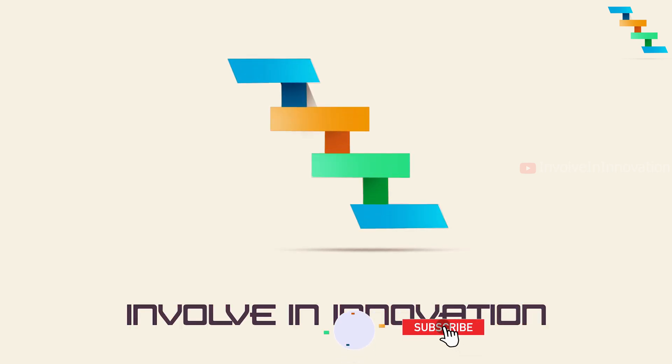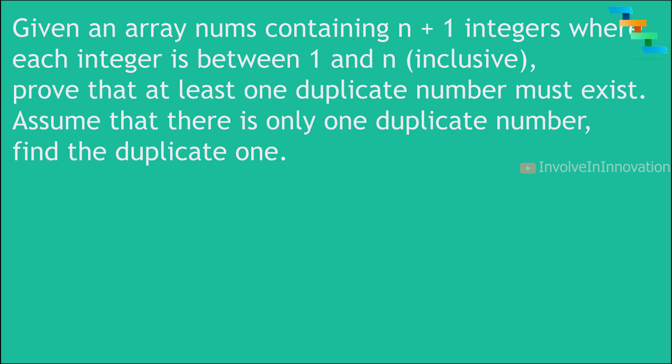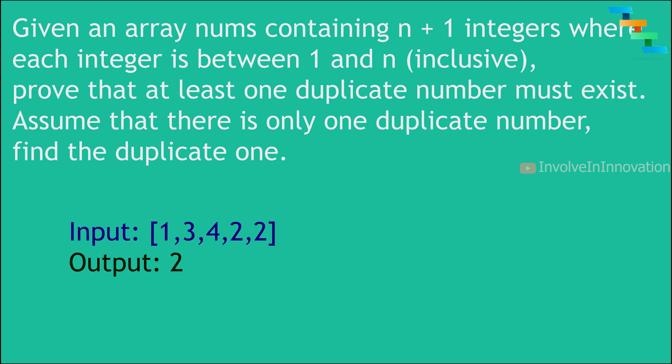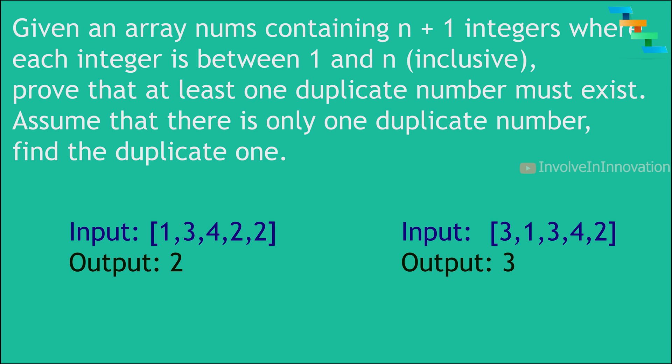In this video we will see another interesting problem: finding the duplicate number. Given n+1 integers where each integer is between 1 and n inclusive, prove that at least one duplicate must exist. Assume there is only one duplicate and we need to find it. For example, given [1,3,4,2,2] the answer is 2, and given [3,1,3,4,2] the answer is 3.